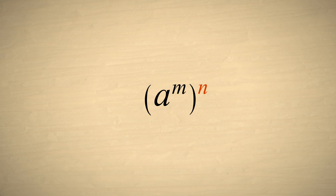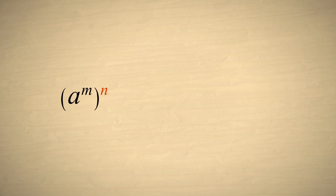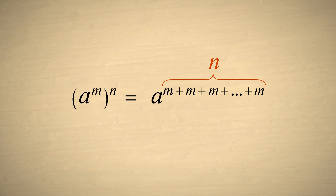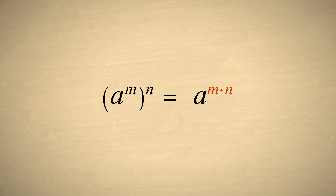In general, if we start with a with an exponent of m and raise that expression to some power n, this is equivalent to n copies of that expression multiplied together. Since these multiplied expressions have the same base, we can add their exponents. This gives us an exponent of n m's added together. m added together n times is m times n, so the result is a to the m times n power.